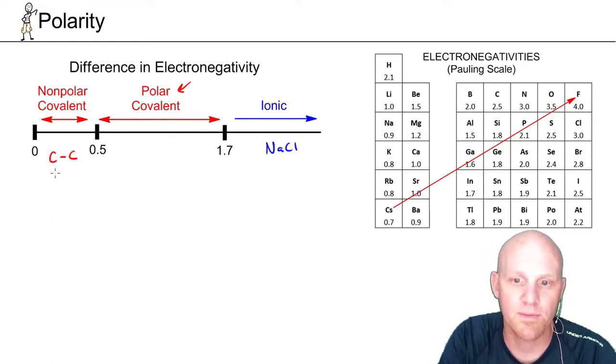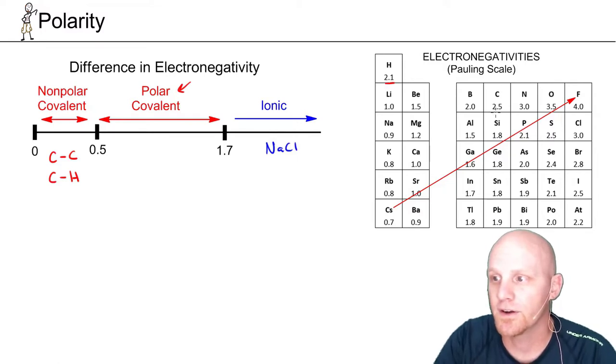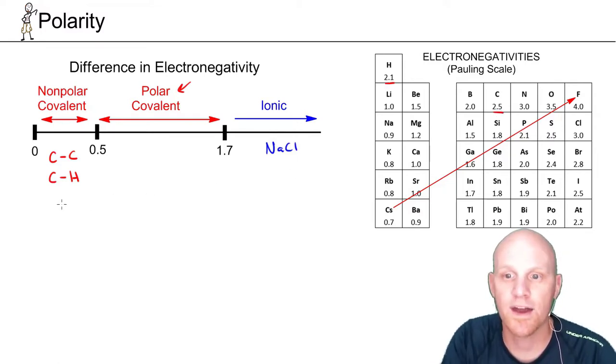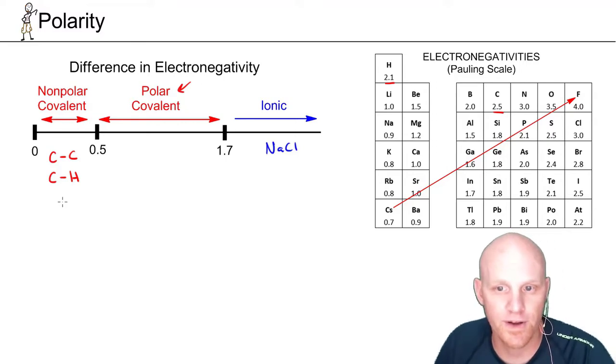But we might take this a step further, and you should definitely realize for organic chemistry purposes that a carbon-hydrogen bond is also non-polar. So if you look at carbon and hydrogen here, it's 2.5 versus 2.1, and that's only a difference of 0.4, and that also falls in the non-polar covalent range. So we'll treat both carbon-carbon and carbon-hydrogen bonds as being non-polar covalent.